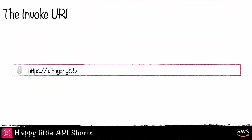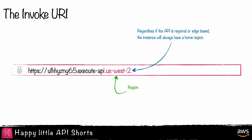The unique ID is followed by the static text Execute API, and then the region the API is located in. Regardless if the API is regional or edge-based, the instance will always have a home region. If the API is edge-based, API Gateway will manage edge-based access to the regional endpoint.